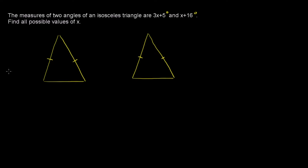Isosceles Triangle of 3x, 5 degrees, and 16 degrees. This is 3x5 degrees, and this is 3x5 degrees, and this is 3x6 degrees.